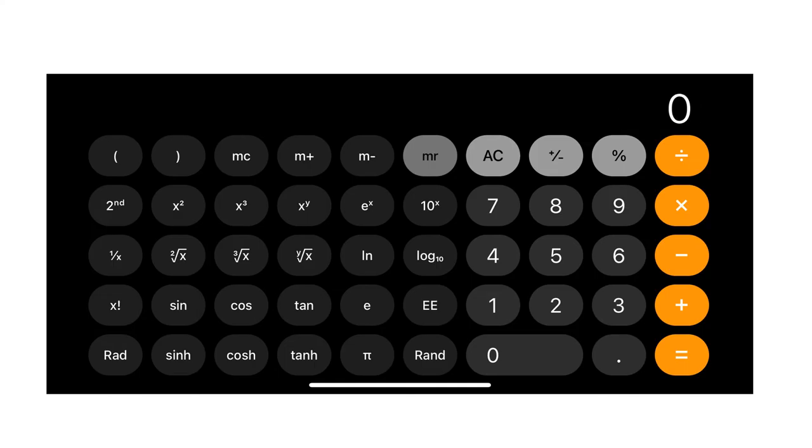You can calculate fractions that have a numerator other than 1 using the division button. Enter your numerator value, then press the division key, and then enter the denominator value. When you press the equal button, you will get the answer.